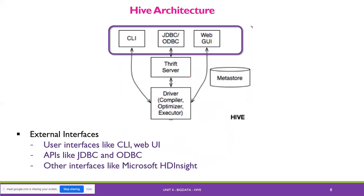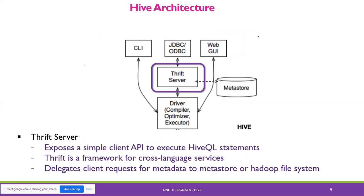The components available in Hive architecture: the first component is the external interface - user interfaces like CLI (character-level interface) and graphical user interface. APIs such as JDBC and ODBC are also application programming interfaces. The second component is the Thrift server, which is a framework for cross-language services, handling client-server requests.